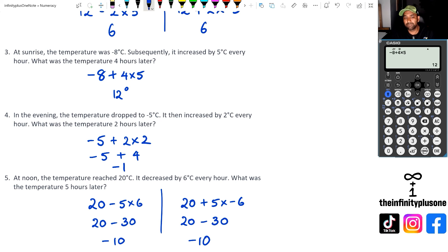Either way you do it, you should end up with negative 10 as your answer. It doesn't matter which way you do it, folks. Of course, let's just put this in the calculator just to double check. We're going to go 20 take away five times six, and that's equal to minus 10 degrees.